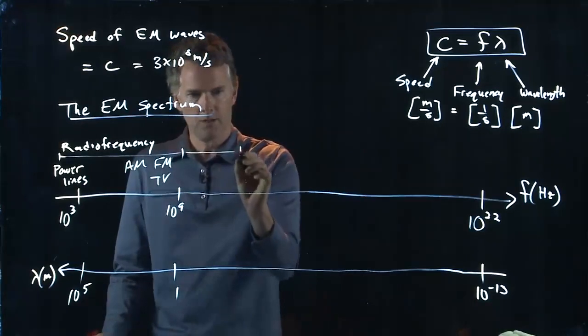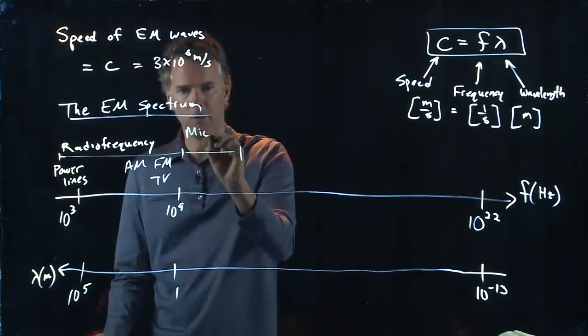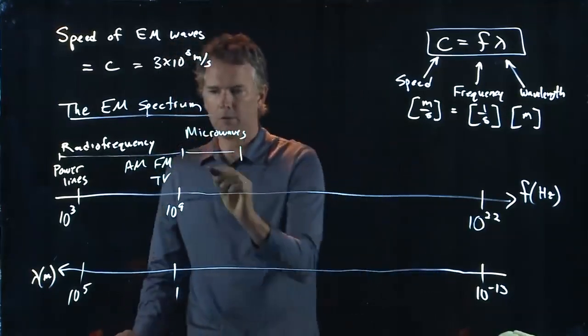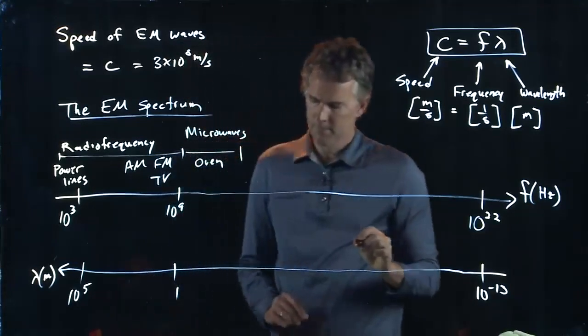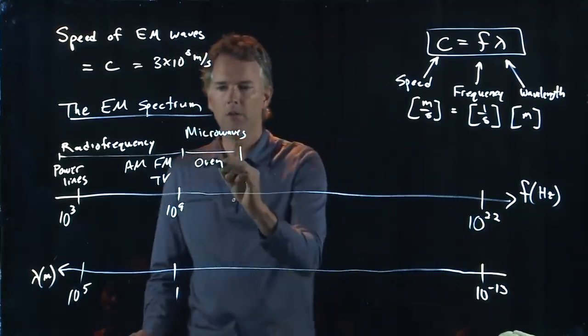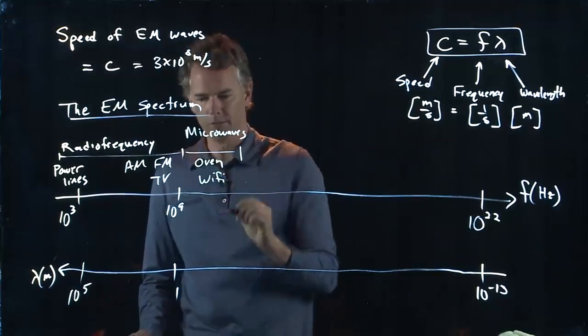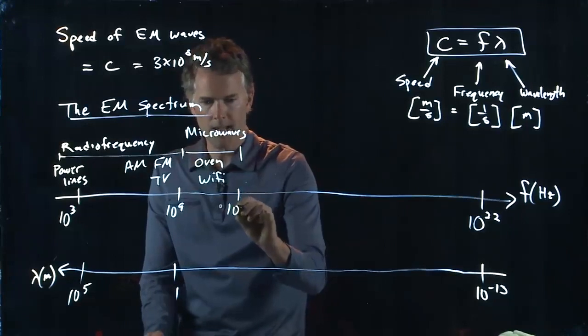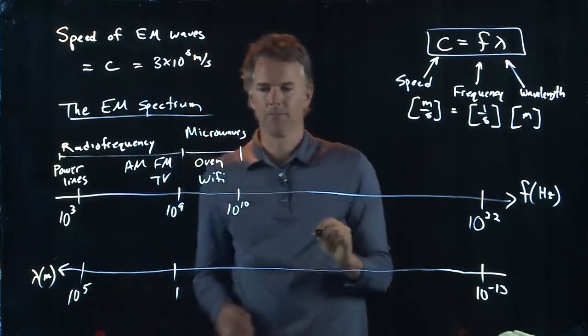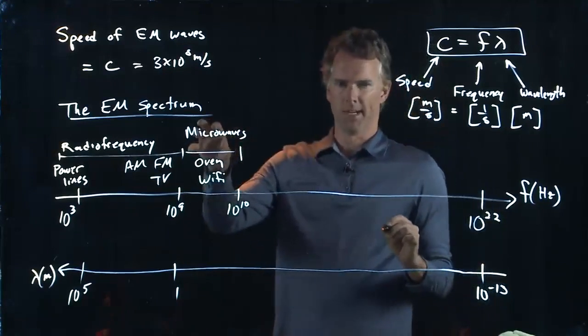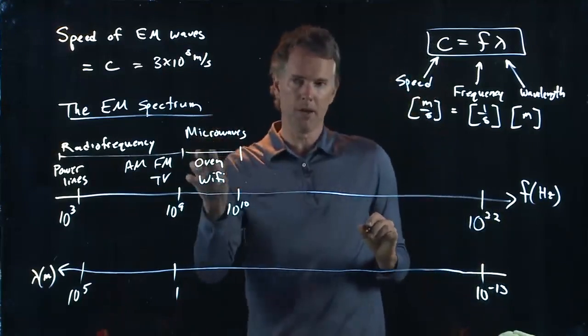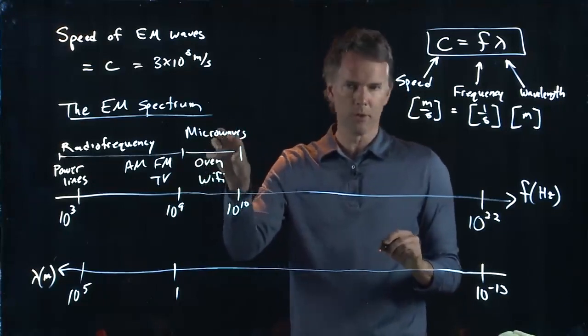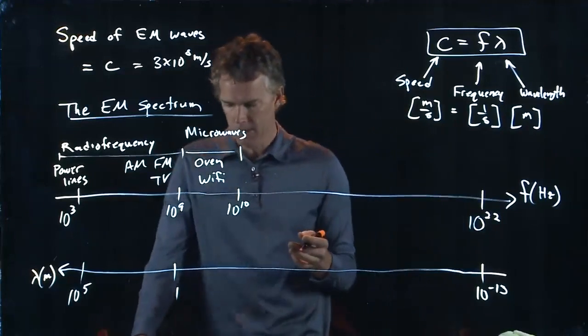The next region is called microwaves, and microwaves are like your microwave oven, but also your Wi-Fi signals. And this is going to go up to on the order of 10 to the 10, or 10 to the 11. This is what we talked about in class. People are a little concerned about cellular phones and Wi-Fi signals, because it's really close to the same frequencies that you use for your microwave oven to heat your food.